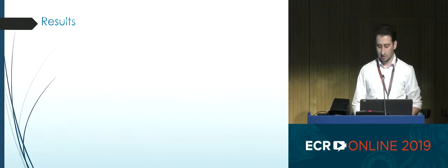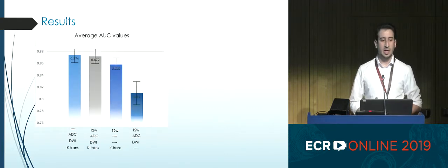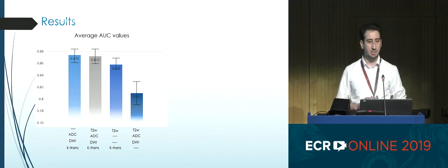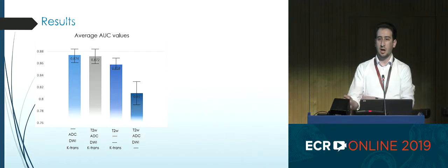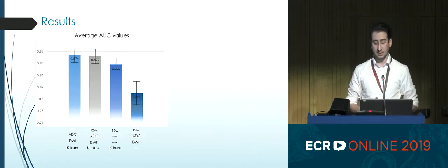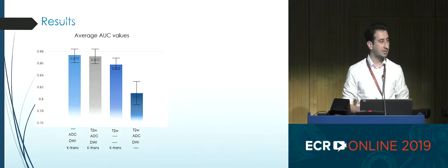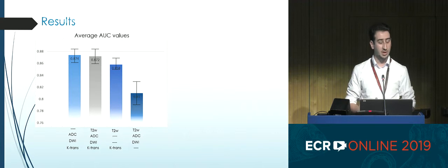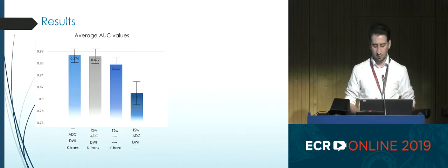Looking at the results, the ADC, DWI, and K-trans combination achieved the best average AUC among all eight-fold cross-validations. When we added T2, it didn't add any valuable information to the overall combinations. When we deleted ADC and DWI, we dropped the performance.